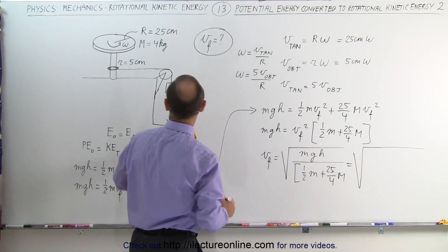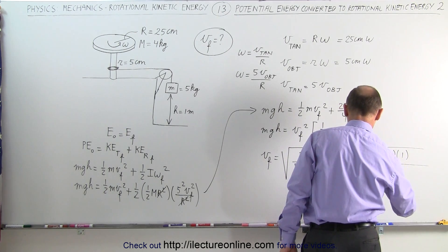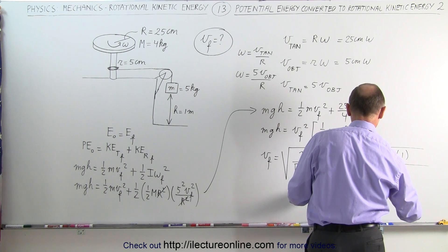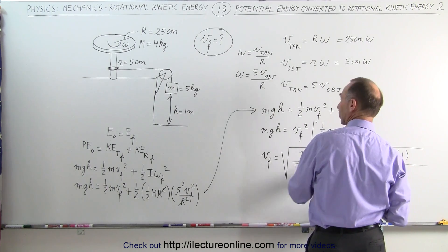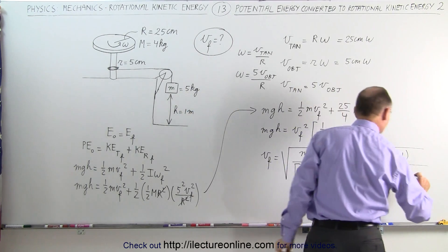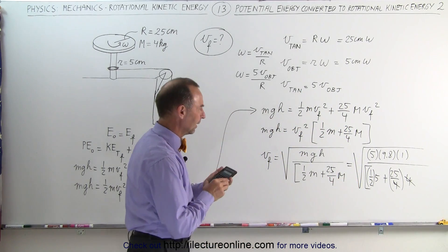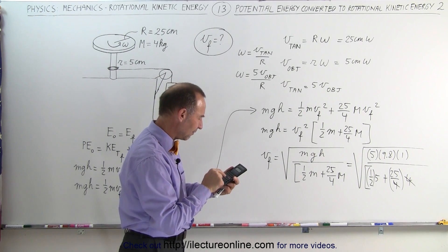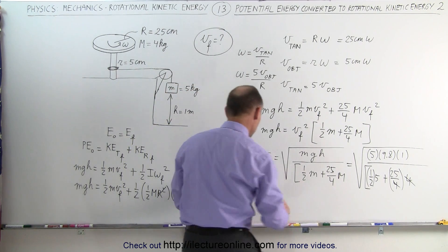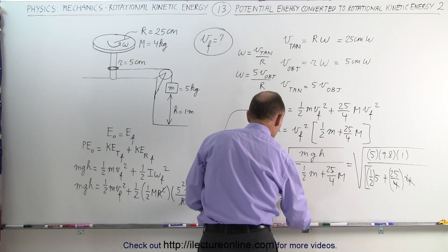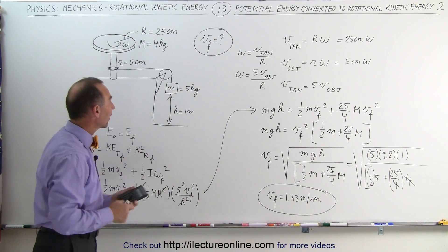V_final equals the square root of: the mass of the object (5 kilograms) times 9.8 times the height of 1 meter, divided by one-half times the mass of the object plus 25/4 times the mass of the disc. The 4's cancel out. In the numerator we get 5 times 9.8 which is 49, divided by 27.5. Taking the square root gives 1.33 meters per second. So V_final equals 1.33 meters per second.